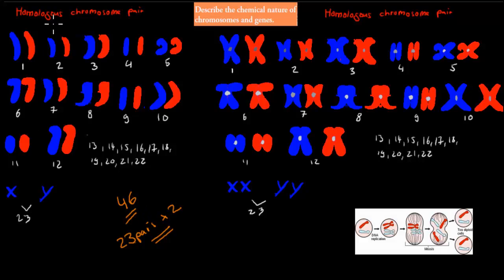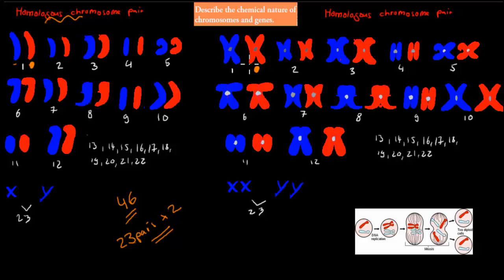So we have 23 of these homologous chromosome pairs, where in each pair we have two more or less identical chromosomes. But if I were to tell you that this one here is the same as this one here — that they're actually the identical ones — you might be a bit confused because they look different. This concept always confused me in school: why we talk about a chromosome both in their single form and in that strange X form.